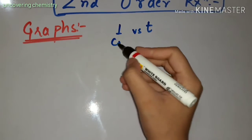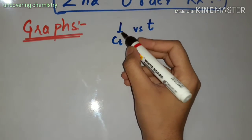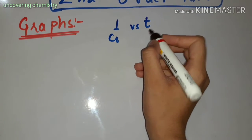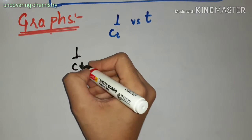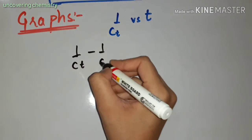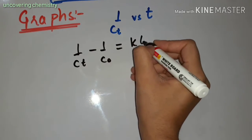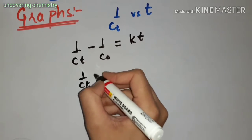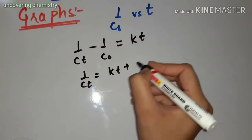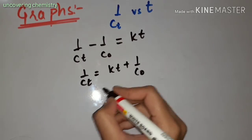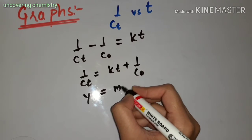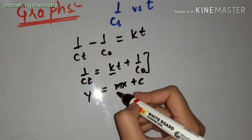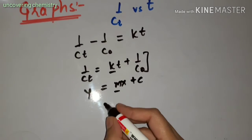Next comes the graphical part for the second order reaction. The first graph is of 1 upon CT (i.e., 1 over concentration) versus time. From the equation: 1 upon CT minus 1 upon C-naught equals KT, this can be written as 1 upon CT equals KT plus 1 upon C-naught. This is the straight-line equation where the intercept is 1/C-naught and the slope is positive.